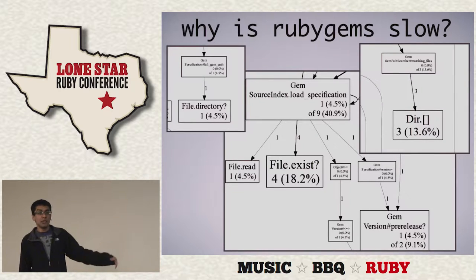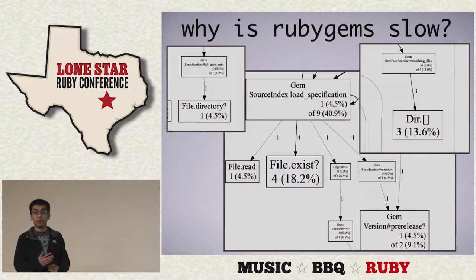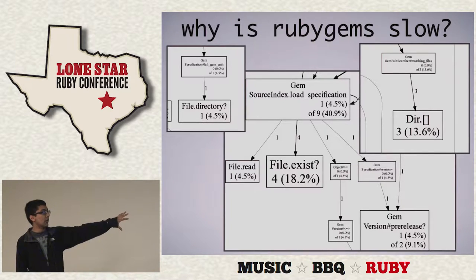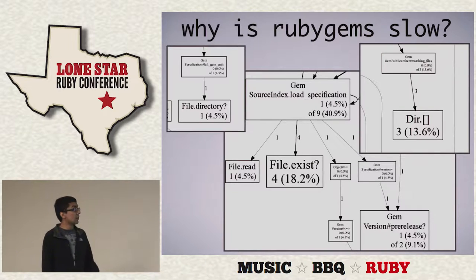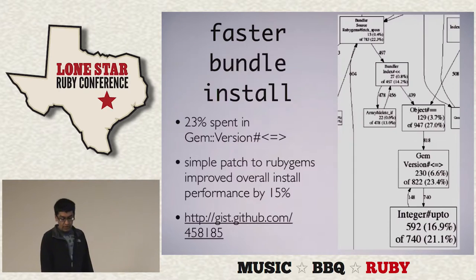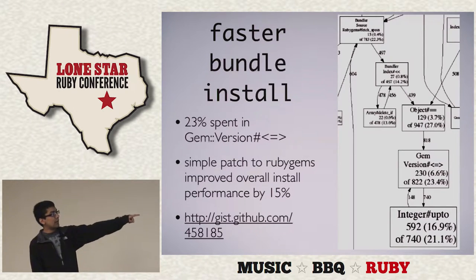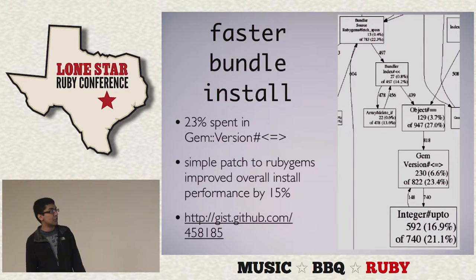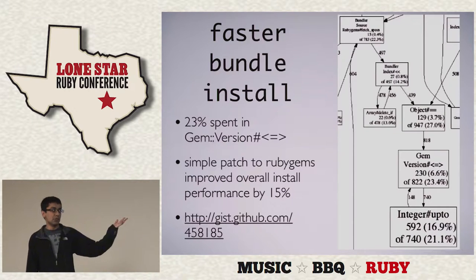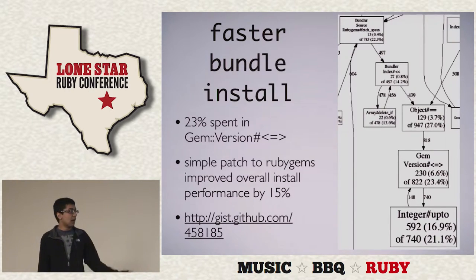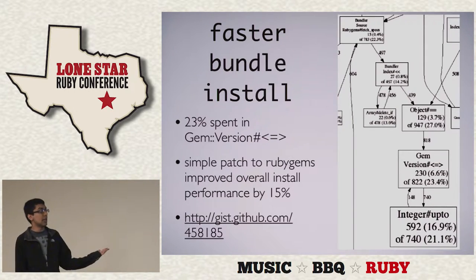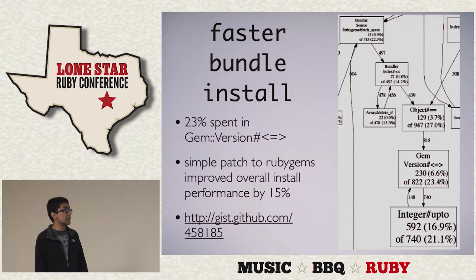Running perftool.rb on RubyGems, you'll notice it spends a lot of time on filesystem operations, figuring out where gem specs are when you require a file and check all the load paths. Recently I ran this on Bundler and noticed that about 23% of the time during bundle install was spent in Gem::Version#<=>, basically comparing gem version objects to figure out which one to install. A simple patch to RubyGems improved the overall performance of bundle install by about 15% through micro-optimizations in Gem::Version. Knowing that a lot of time was spent there made those micro-optimizations make a big difference.